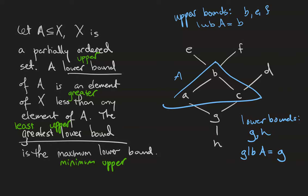d is not an upper bound of the set because it is only greater than c and not the other two elements.